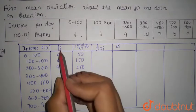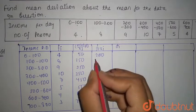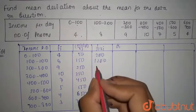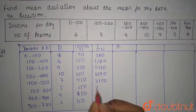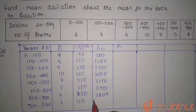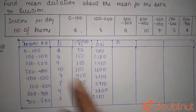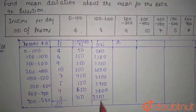300 plus 400 by 2 is 350. Similarly 450, 550, 650, and 750. We are going to multiply fi xi. 4 into 50 will be 200, 8 into 150 is 1200, this multiplied by this will be 2250, similarly 3500, 3150, 2750, 2600, and 2250.